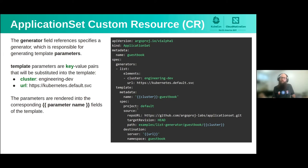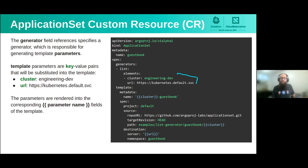Where do those parameters come from? They come from generators. Generators are responsible for producing the parameters that templates consume. In this case, I'm using the list generator — one of six generators currently in the Application Set controller. The list generator is very simple: within the YAML, you specify a set of values. Here I've got a 'cluster' field and a 'URL' field, and those are inserted into the corresponding values within the template.